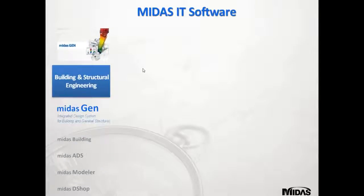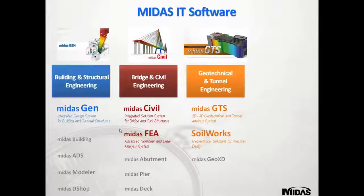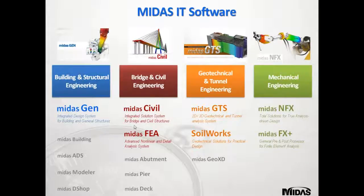The first software is for the building industry, called MidasGen, composed of several tools including a Modeler and DSharp. The second category is for bridges — Midas Civil is very strong for simulating all kinds of bridges. Midas also has Midas GTS for geotechnical and tunnel engineering, covering 2D and 3D geotechnical analysis, and Midas NFX for mechanical analysis.